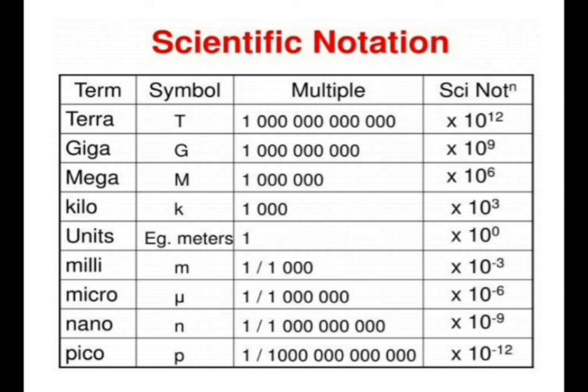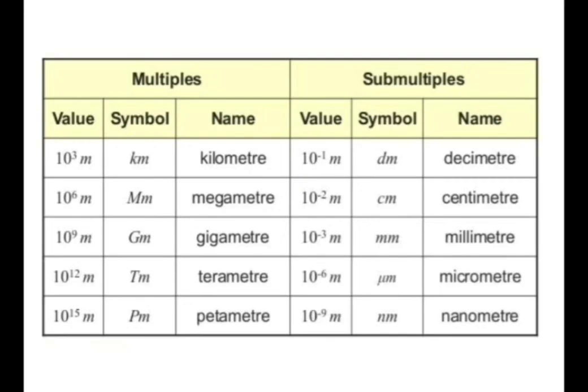For submultiples, small letter symbols are used. Milli is represented by small m and equals 10 to the power minus 3 — meaning we divide by 1000, giving a very small result. Micro is represented by the symbol mu and equals 10 to the power minus 6. Nano is represented by small n and equals 10 to the power minus 9. Pico is represented by small p and equals 10 to the power minus 12.